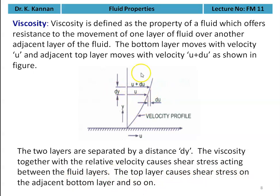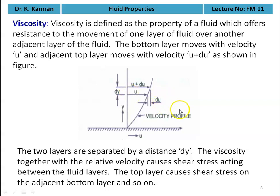The viscosity, together with the relative velocity, causes shear stress acting between the two layers. The top layer causes shear stress on the adjacent bottom layer. Moving from the top, the top layer moves with higher velocity u + du and the next bottom layer moves with lower velocity u. Moving downward, the velocity of the fluid is decreasing. At the bottom, the fluid is not moving at all — it is sticking onto the surface. Moving in the y direction, velocity is increasing. The top layer offers resistance for the movement of the bottom layer — this resistance is called viscosity.